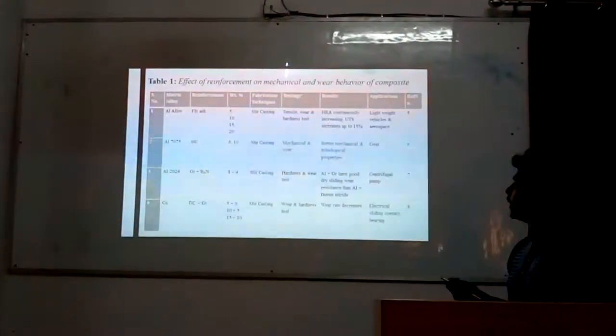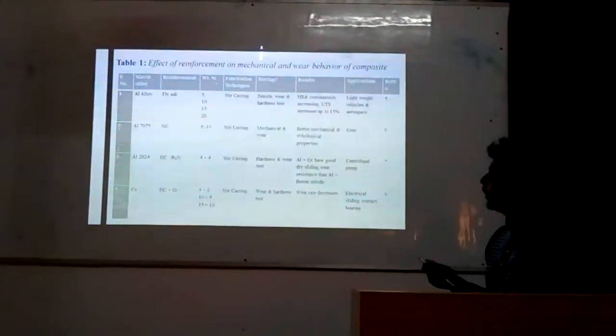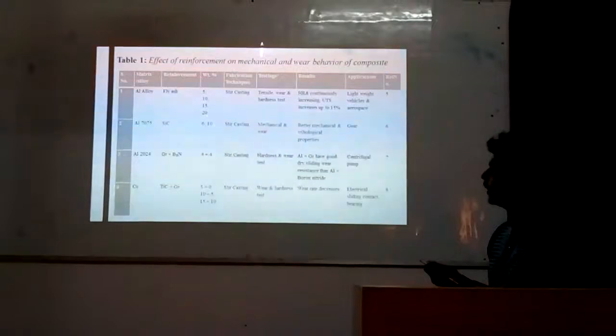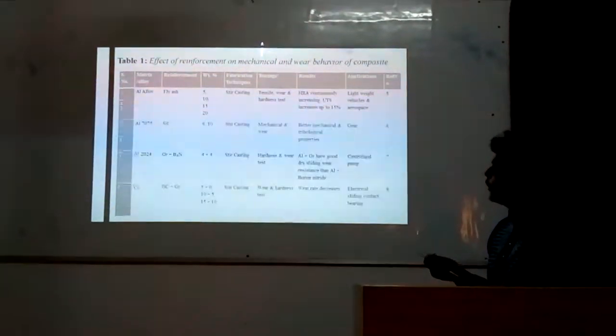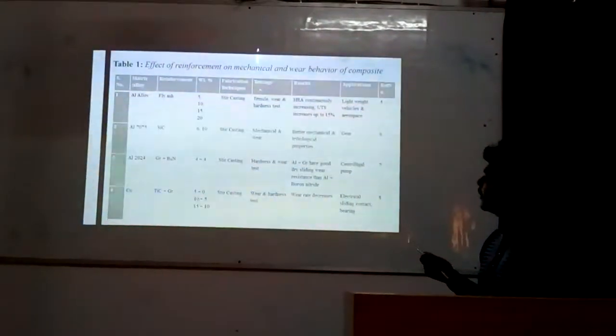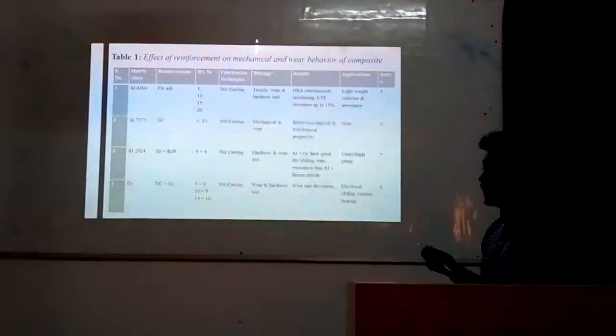I have made a tabulated format for showing my literature review. First one is aluminum alloy mixed with fly ash. Fly ash weight percent is 5%, 10%, 15%, and 20%. This composite is made by steel casting, and the testings performed are tensile, wear, and hardness test.